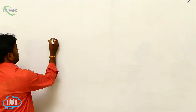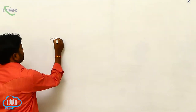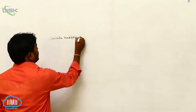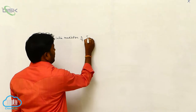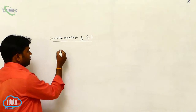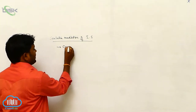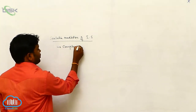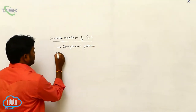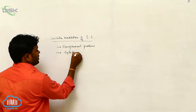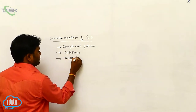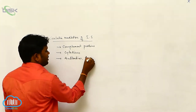The fourth basic concept is soluble mediators of the immune system. There are three types of soluble mediators: first one is complement proteins, second is cytokines, and third one is antibodies.